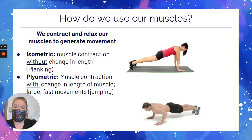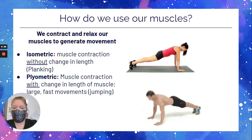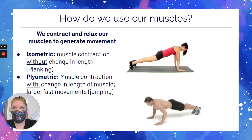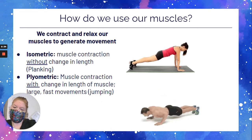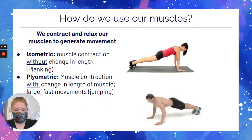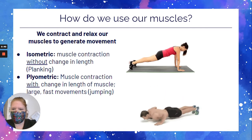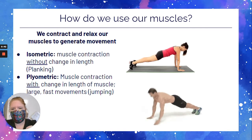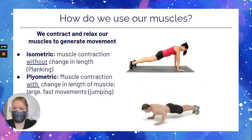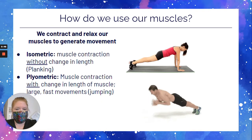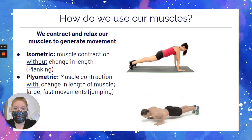We contract and relax muscles to generate movement. Remember, one of the rules of skeletal muscles is they can only pull, never push, but they can contract and lengthen to allow all of those movements. The first main classification is to either classify something as isometric or plyometric. Isometric means your muscles are contracting but they're not changing in length, so think about just being still.